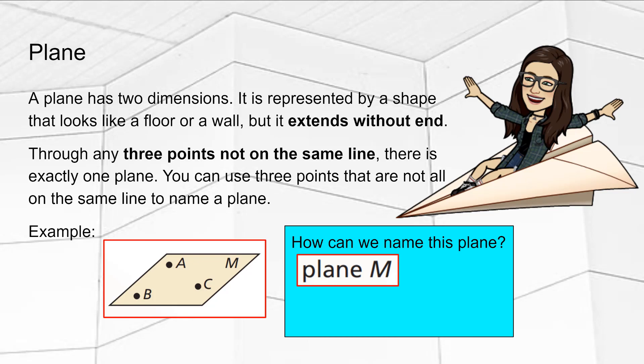So we can call this plane M, or we can use any three points not on the same line. So I see three points A, B, and C. Plane A, B, C. Those do not have to be in that order.